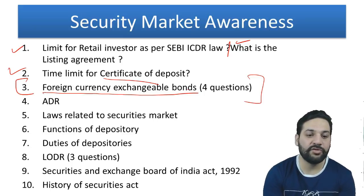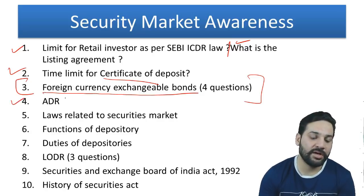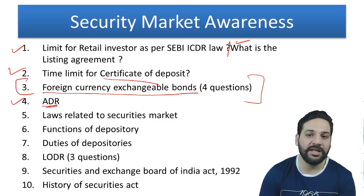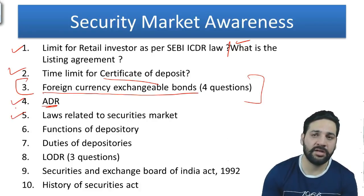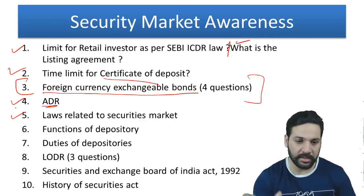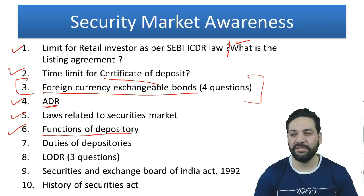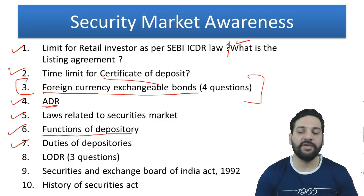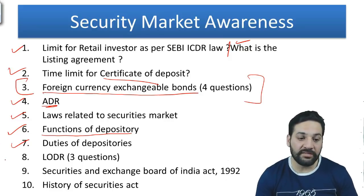The person who made the paper was very interested in Foreign Currency Exchangeable Bonds. There was a simple question on ADR — a depository receipt traded in the US exchange is known as ADR. Then, which of the following laws are related to security markets — you need to select which one is not a law related to security markets. There was a question on functions of a depository, and making a trading terminal is not a duty of a depository.